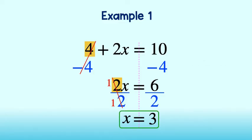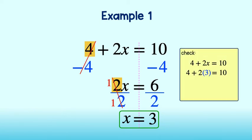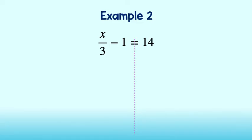We can check our answer by replacing x with 3 in the original equation and solving. 2 times 3 is 6. 4 plus 6 is equal to 10. We end up with a true statement, which means we were correct. x does equal 3.